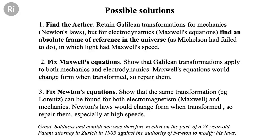There were three possible solutions. You could continue, as Michelson had devoted his life, to finding the ether. You could assume that Maxwell had made a mistake and fix Maxwell's equations. Or you could assume Newton made a mistake and fix Newton's equations. Newton, of course, had immense authority. And it really did require tremendous boldness and confidence on the part of a 26-year-old patent attorney in Zurich — Albert Einstein — to conclude that it was Newton who was wrong.